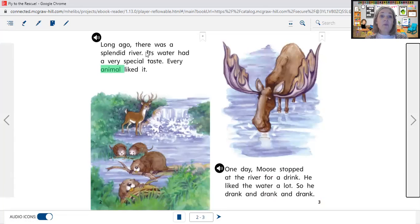Long ago there was a splendid river. Its water had a very special taste. Every animal liked it. One day Moose stopped at the river for a drink. He liked the water a lot, so he drank and drank and drank and drank. Once upon a time this is our folk tale. There was a river with very tasty water and all the animals like to drink from it. And then one day Moose stopped for a drink and he drank and drank and drank.